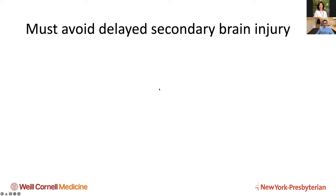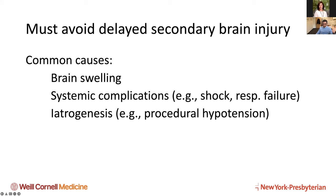Besides managing swelling, the other important task when caring for TBI patients is to avoid secondary brain injury. Common causes include brain swelling — which we've talked about how to monitor and treat — systemic complications, and hypotension and other iatrogenic issues.